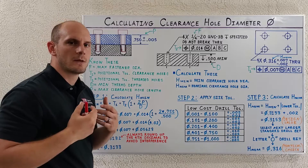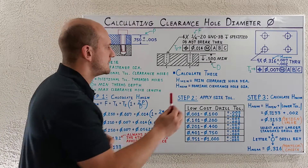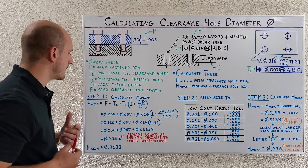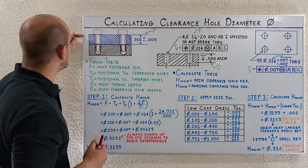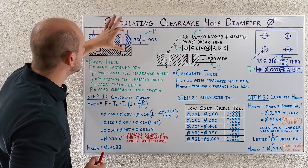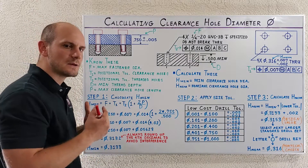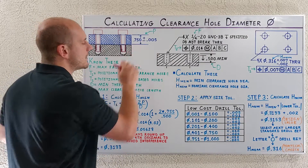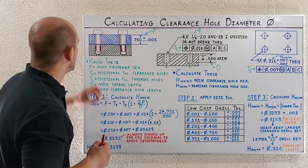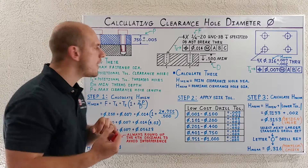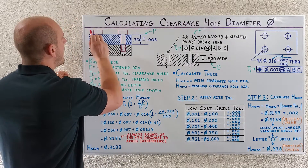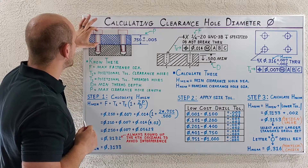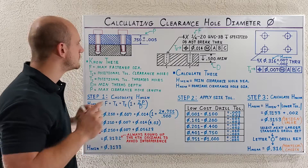D is our minimum thread depth. Since these are blind threaded holes, as a designer I need to specify the minimum thread depth, and I've done that here. P is our last value — the maximum clearance hole length — which we get from the part dimensions. In this scenario it equals the maximum thickness of this part. Just be aware the maximum length of your clearance hole doesn't always equal the maximum thickness of the part; if there's a boss on top, you need to account for that as well.